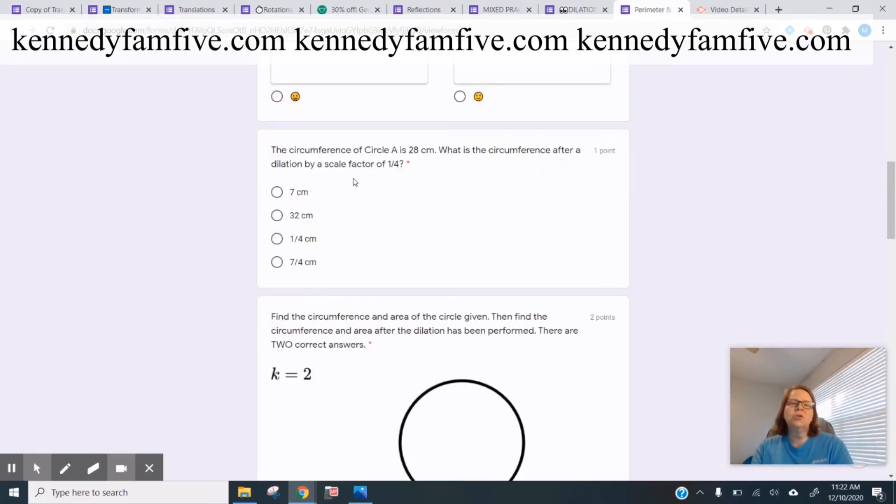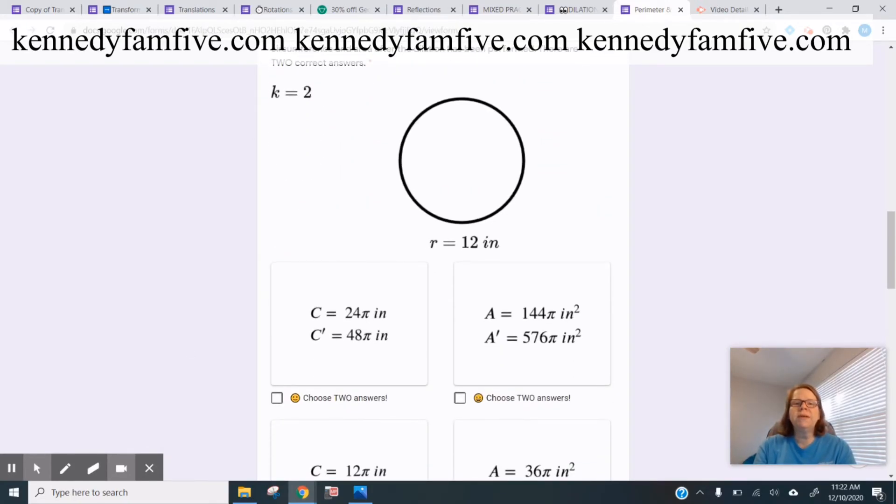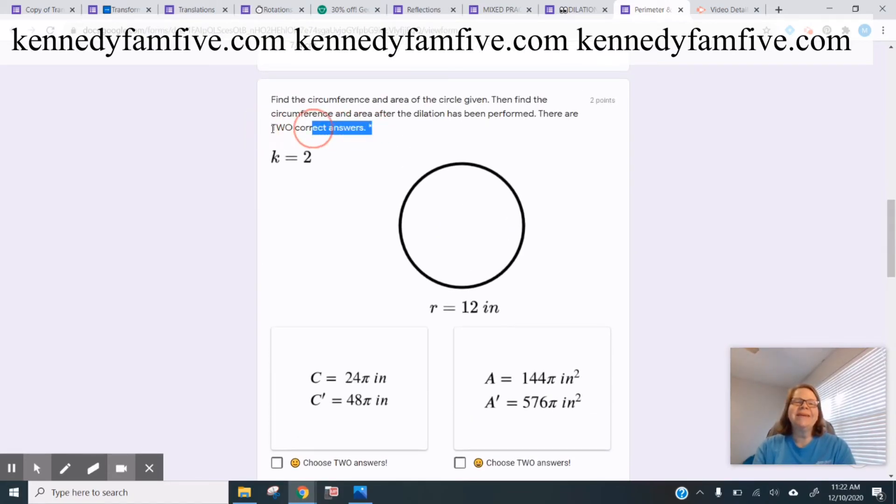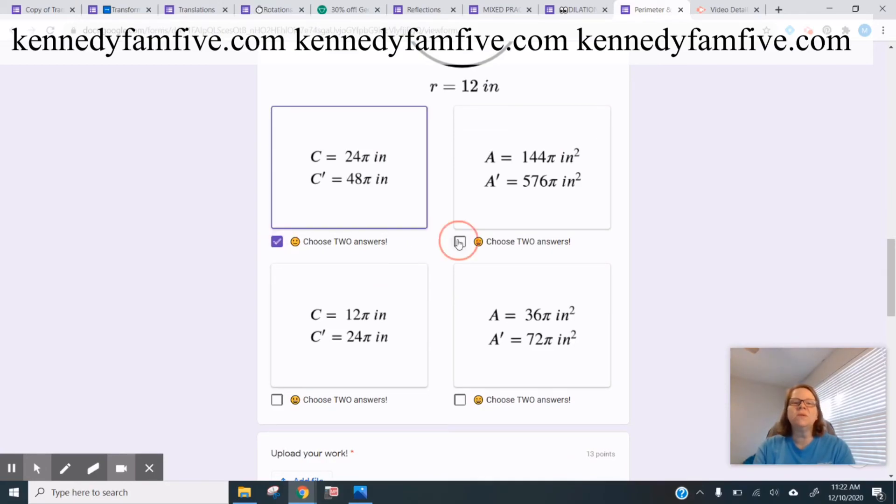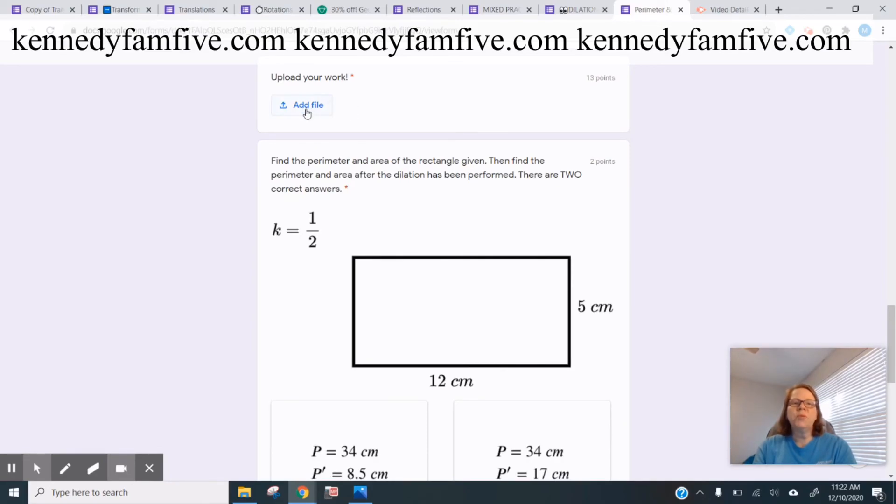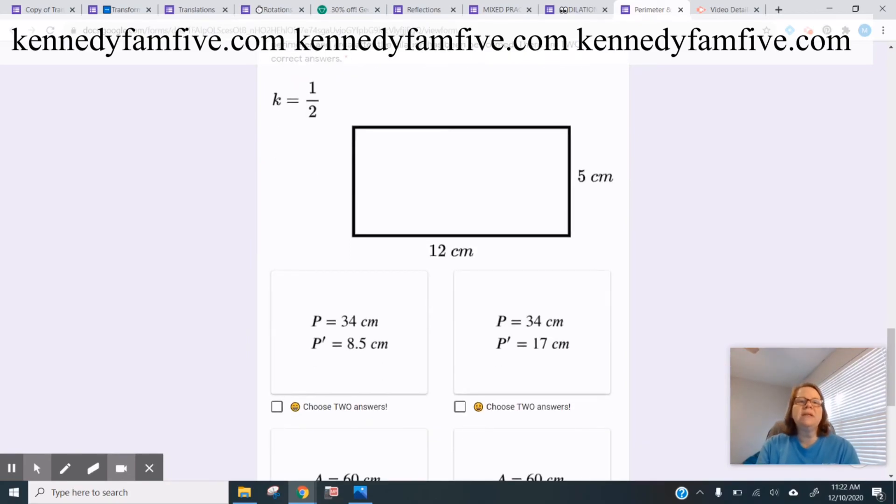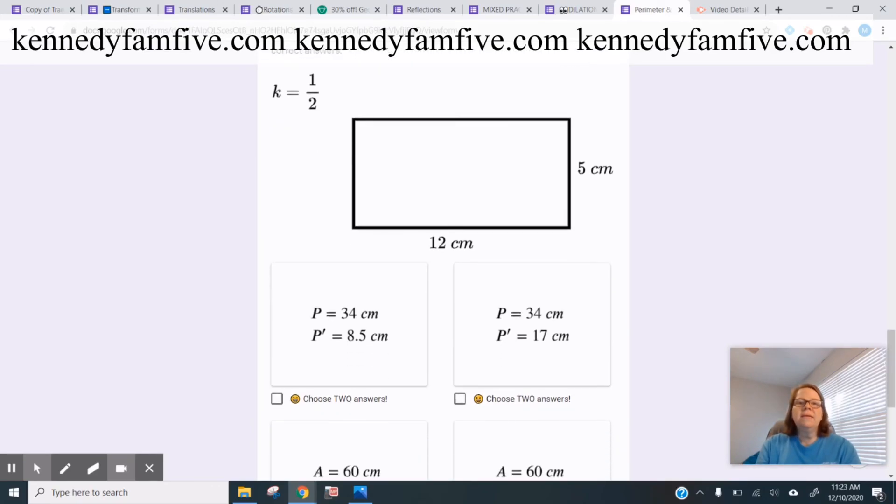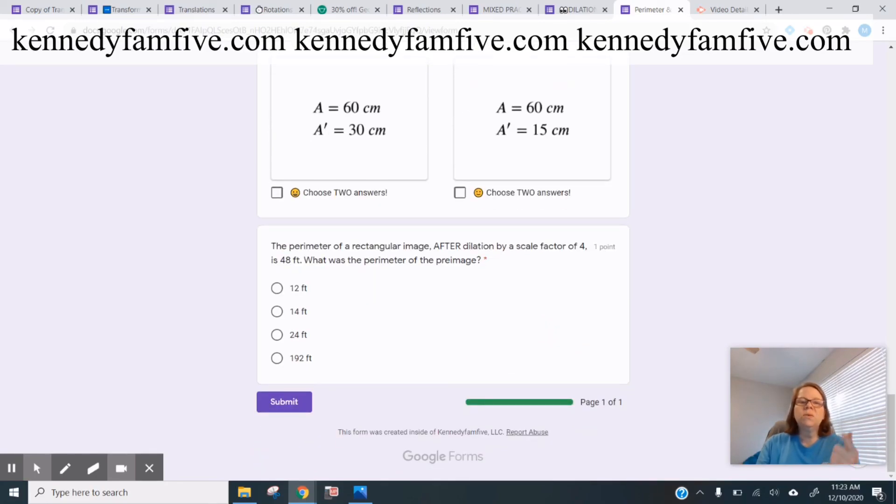And then perimeter and area after dilation. The circumference is this. What was the circumference after dilation by scale factor one fourth. Here they have to choose two answers. So I put it beside the answer choices. Choose two answers. Even though it's written up here two correct answers, I just want to remind them. Got the upload your work button. Anytime that there is work to be shown, I try to add that button in so that it's there for you. When you're in the actual form itself from your side of it, the teacher side, you can always just hit the trash can. It'll be in this area when you click on it and you can just take it out completely if that's not what works for your classroom. And then here's another one with two correct answers. And this one I like. It works backwards. It's saying the perimeter of the image after it's been dilated is this. What was the perimeter of the pre-image? So that's a good little challenging question, I think.